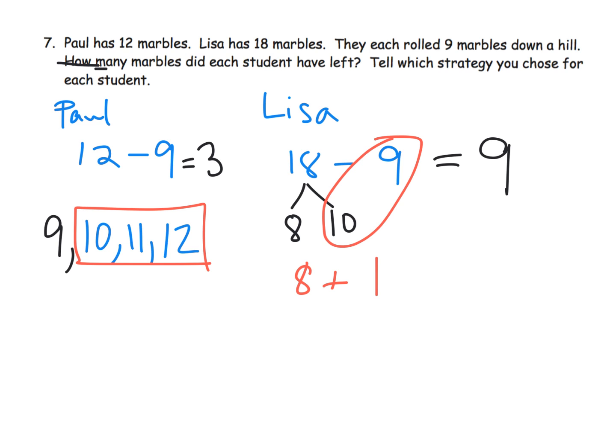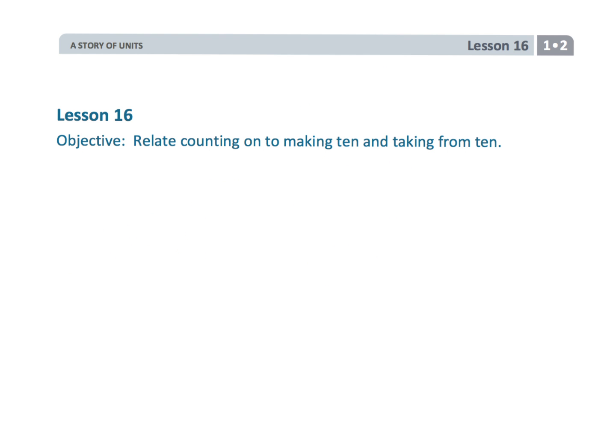The question is how many marbles did each student have left? Well, Paul has 3, Lisa has 9. I used for Paul the count on strategy, and for Lisa I used the take from 10 strategy.